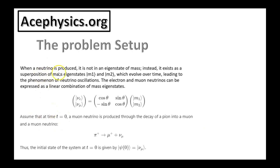Here's the problem setup. When a neutrino is produced, it is not in an eigenstate of mass. Instead, it exists in a superposition of mass eigenstates m1 and m2, which evolve over time, leading to the phenomenon known as neutrino oscillation. The electron and muon neutrinos can be expressed as linear combinations of mass eigenstates. This is the mixing matrix — the electron neutrino is some linear combination of masses, and the muon neutrino is also a linear combination of masses, in a superposition of two masses.